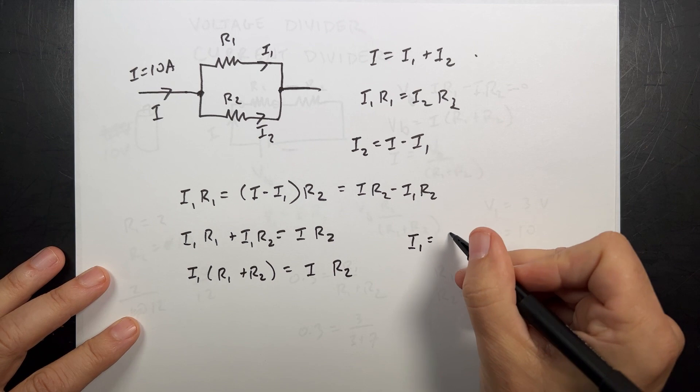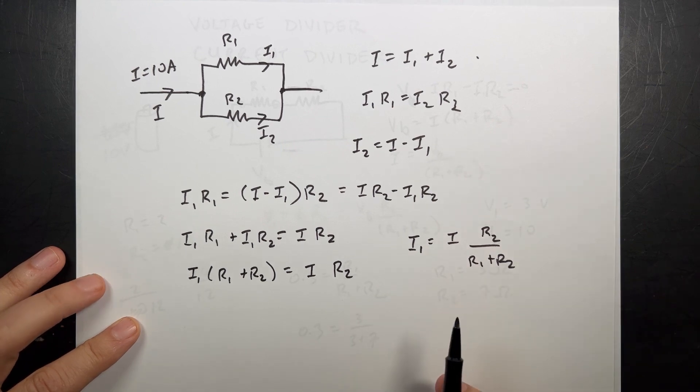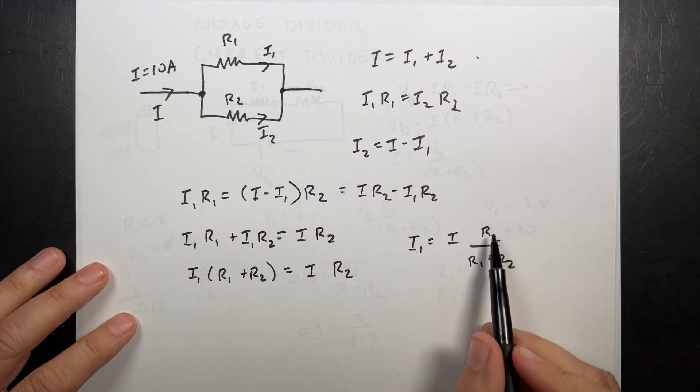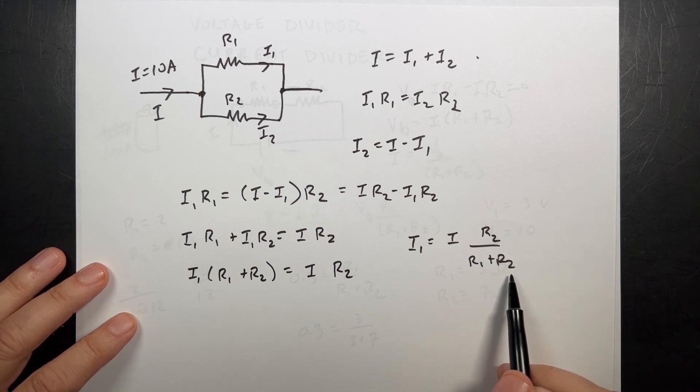I1 is going to be I times R2 over R1 plus R2. And you'll notice it looks very similar to the voltage divider except that the voltage divider said the voltage across one was the total voltage R1 over R1 plus R2. This is R2 divided by R1 over R2.